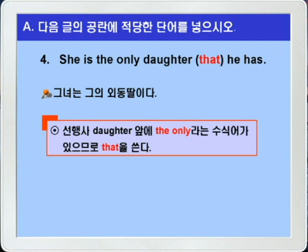하지만 that 대신에 who나 whom을 써도 됩니다. 선행사 앞에 the only 같은 수식어구가 있으면 관계대명사로 that을 주로 쓴다고 했지 that만을 쓴다고는 하지 않았습니다. 선행사가 사람이고 목적격이니까 who나 whom도 가능합니다. 하지만 that을 쓰는 것이 더 자연스럽죠. 정답을 확인해보고 5번으로 가겠습니다.